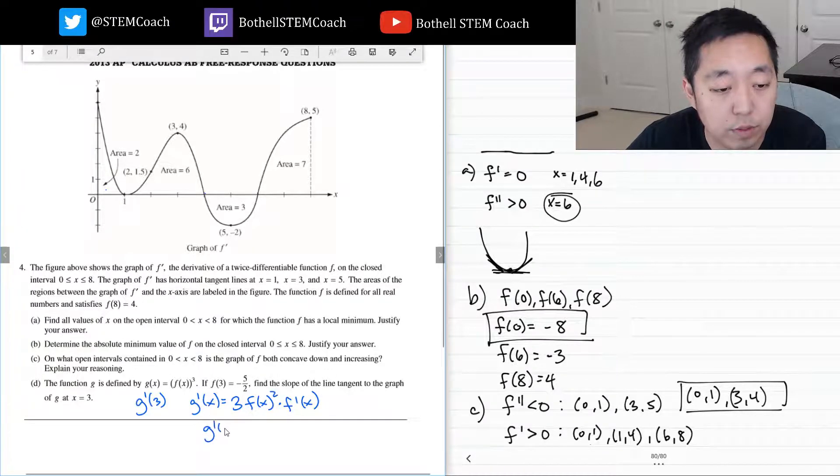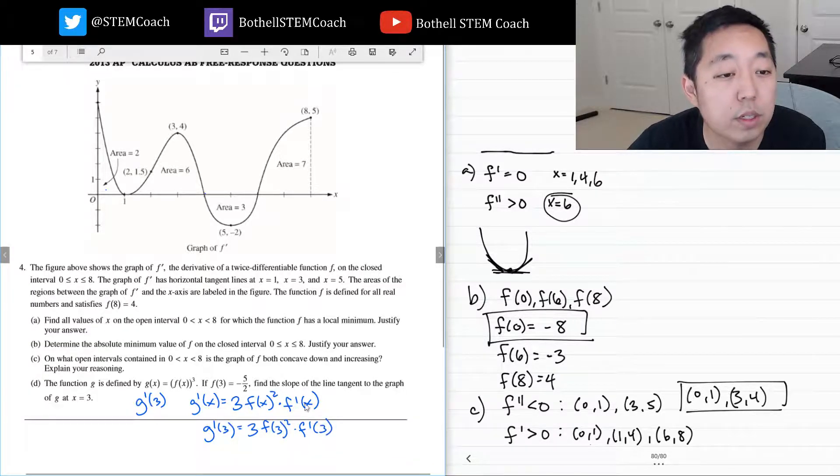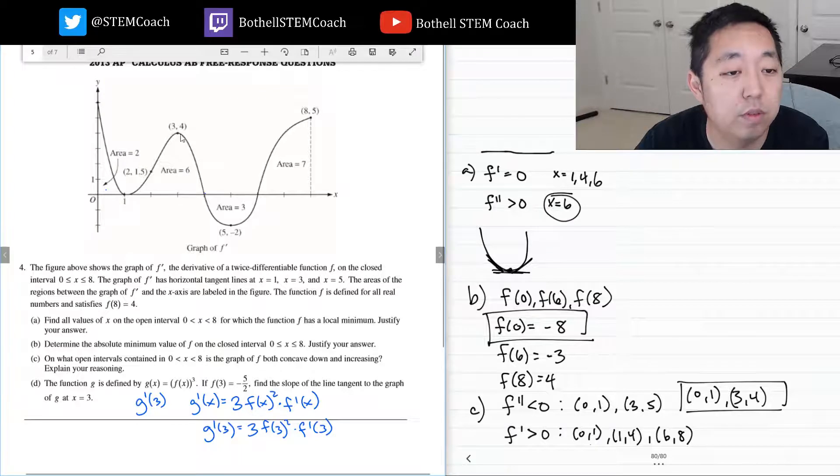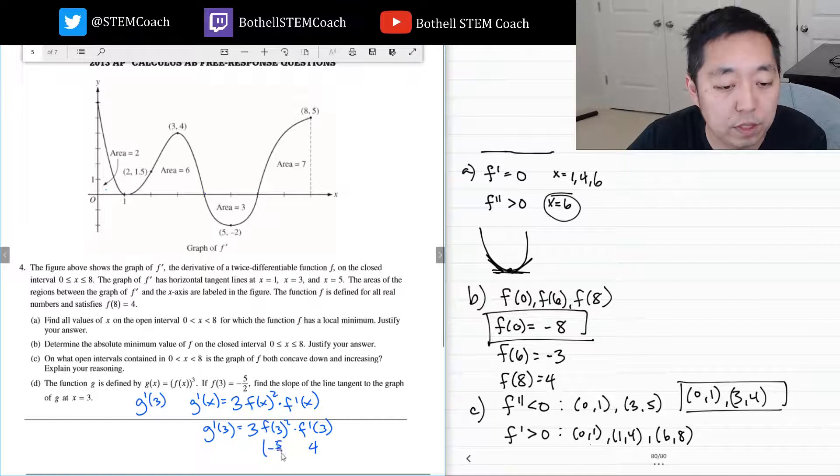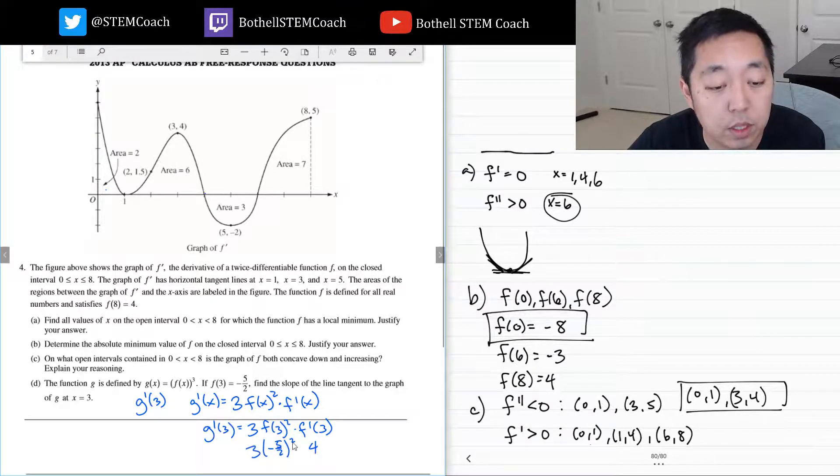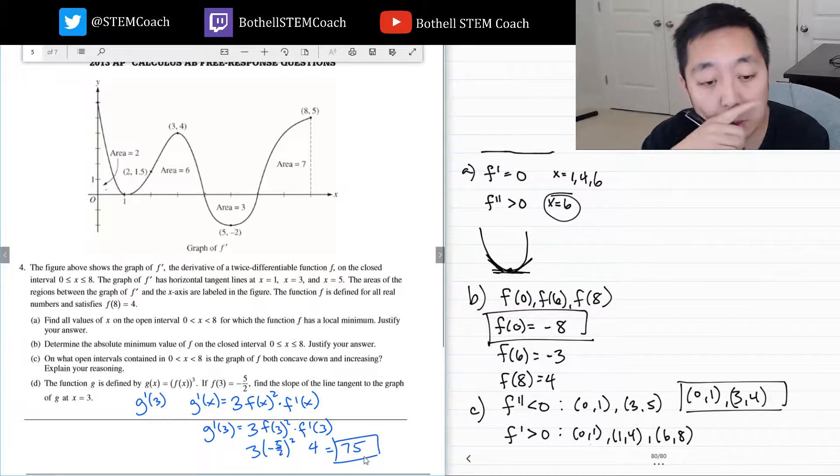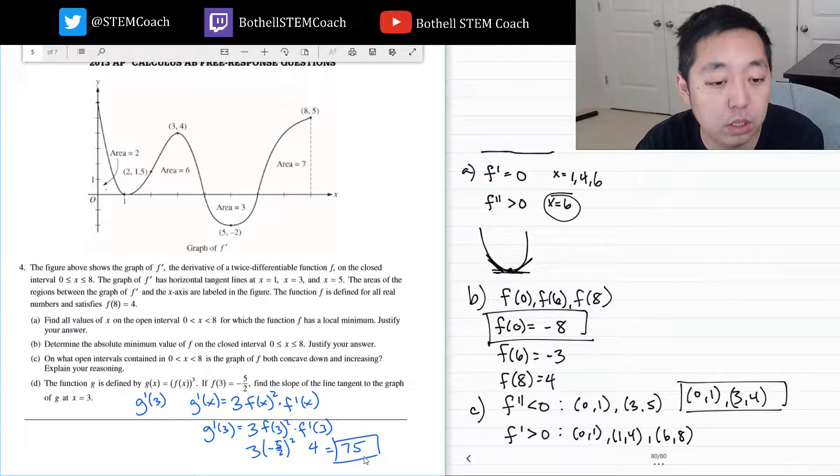So g prime of 3 is 3 f of x squared times the derivative at 3. The derivative at 3 is 4, so this is 4. This is minus 5 halves squared times 3. This is 25 over 4 times 4 is 25, 25 times 3 is 75. Let's double check that math: 5 halves squared is 25 over 4, 25 over 4 times 4 is 25 times 3 is 75.